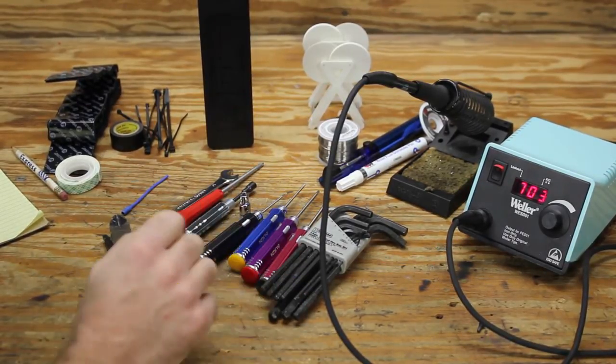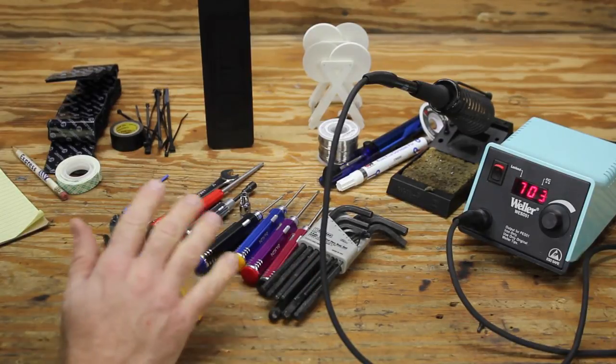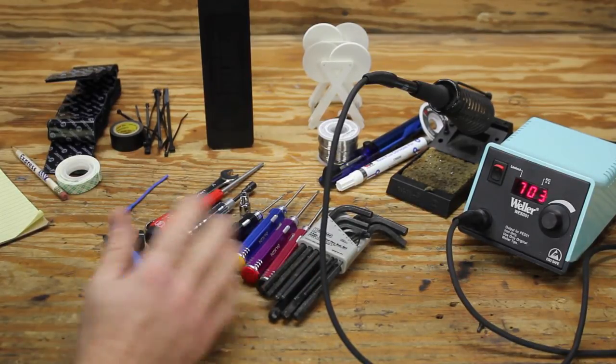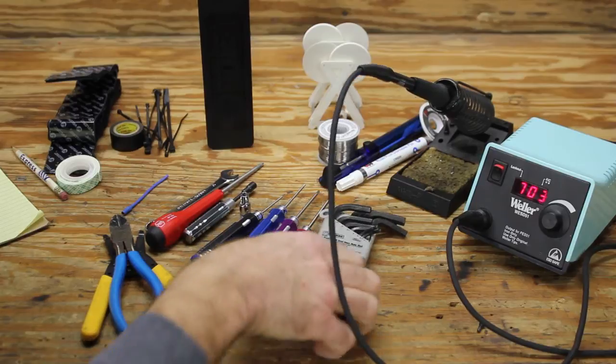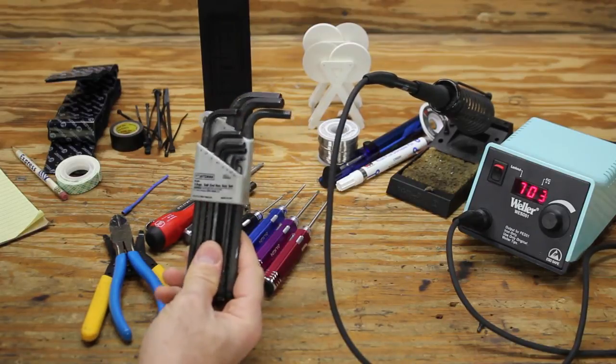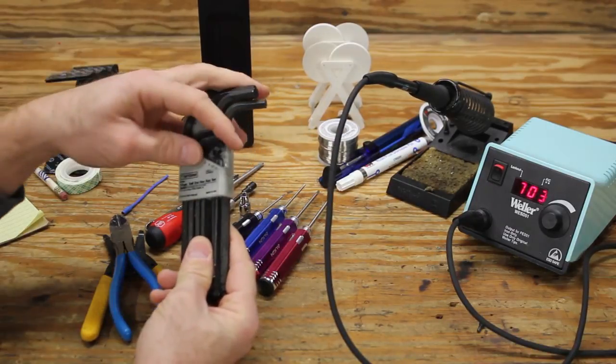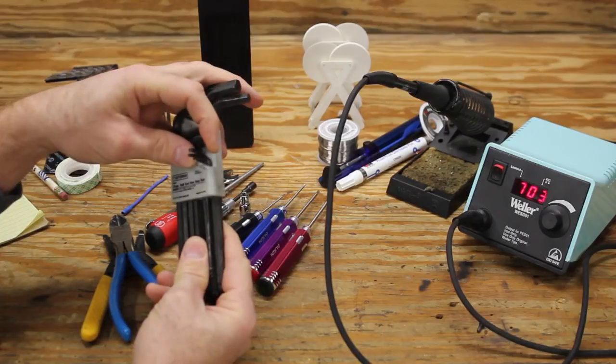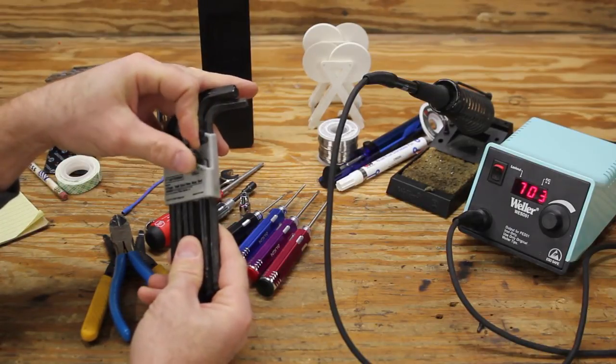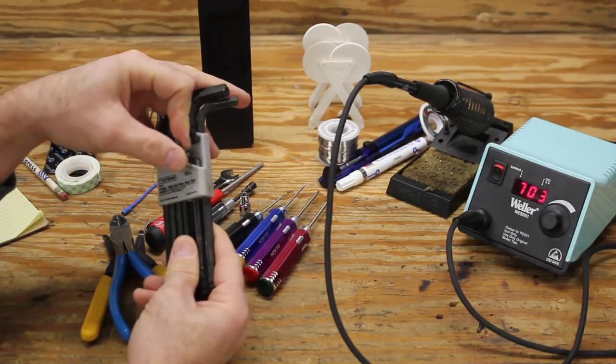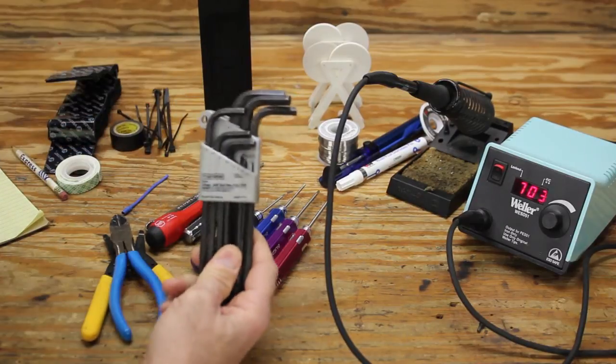As far as hand tools go, most all the helicopters that we build use Allen head bolts or Allen head screws. So you're going to need either a set of Allen wrenches. The sizes that you need to have available range from one and a half to three millimeters. So one and a half, two, two and a half, and three.